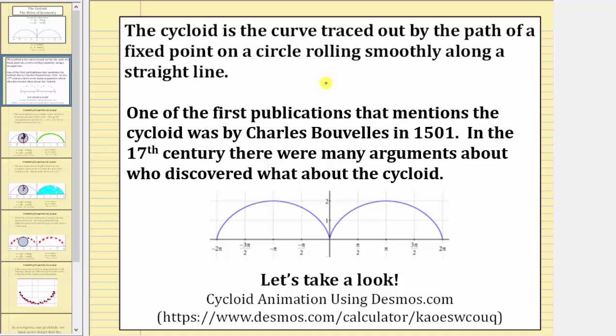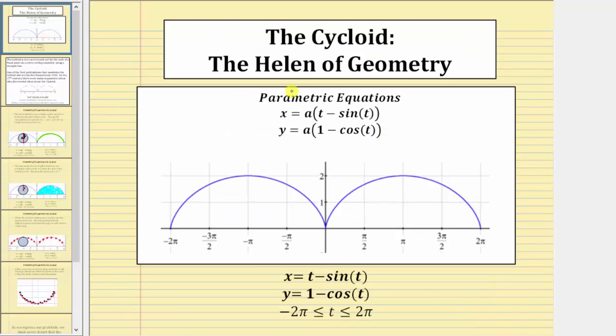If we go back to the parametric equations just for a moment, in this form here, a is the radius of the circle that's rolling smoothly along a horizontal axis.